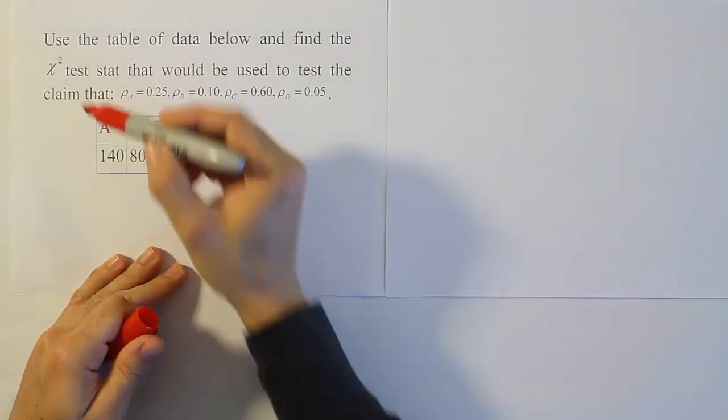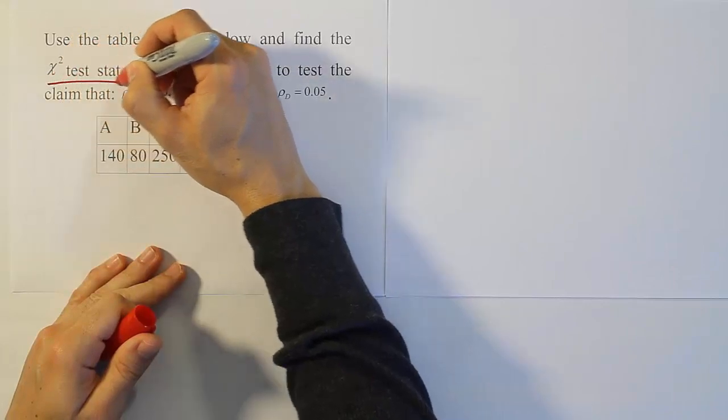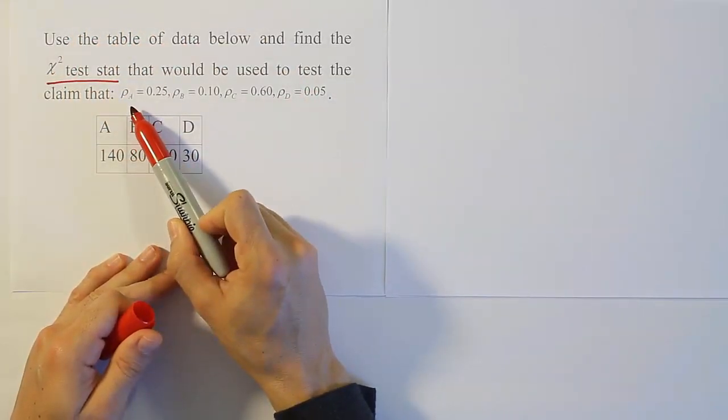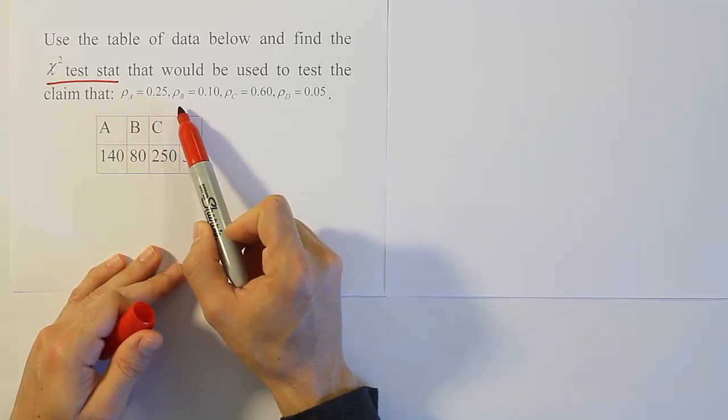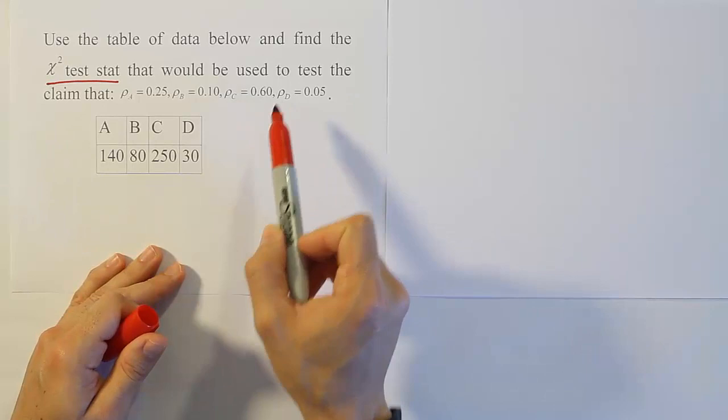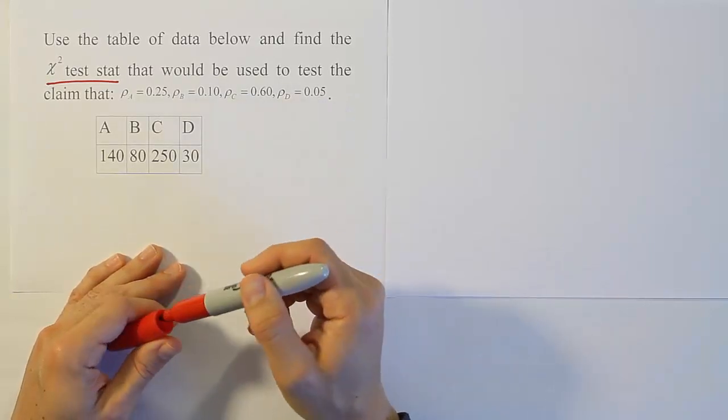Use the table of data below and find the chi-squared test stat that will be used to test the claim that row for group A is 0.25.